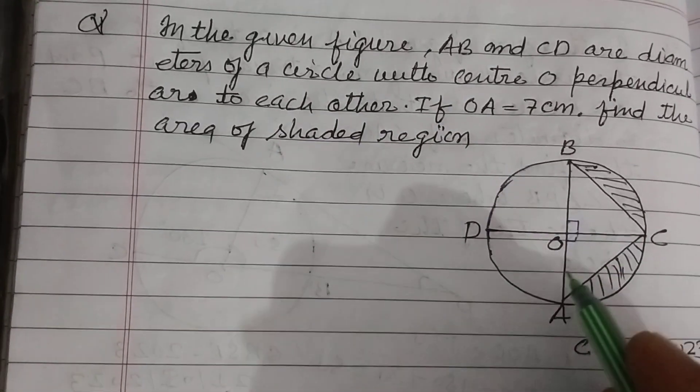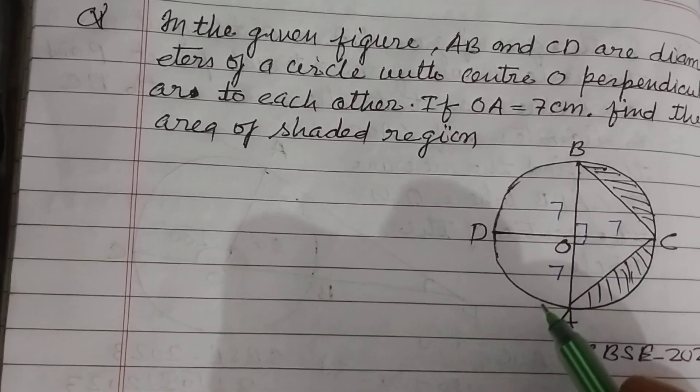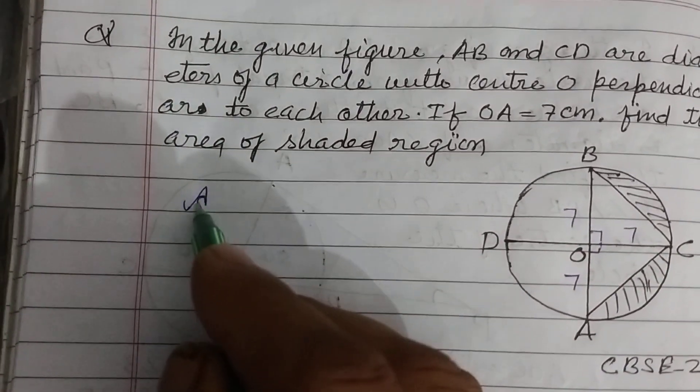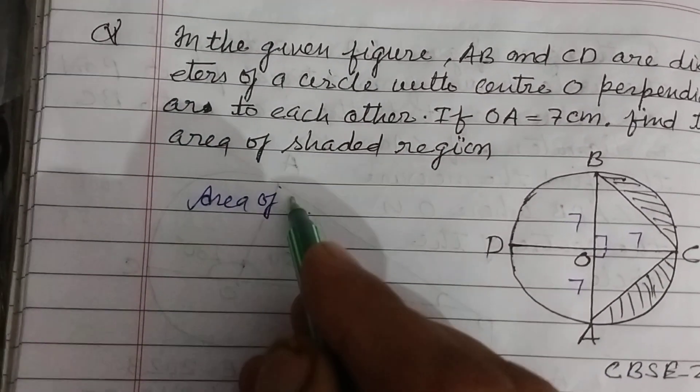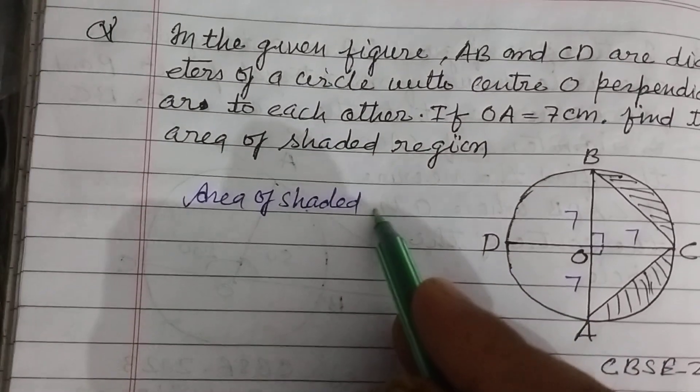If OA equals 7 centimeters - OA is the radius, so this is 7, this is 7, this is 7 also - find the area of the shaded region.